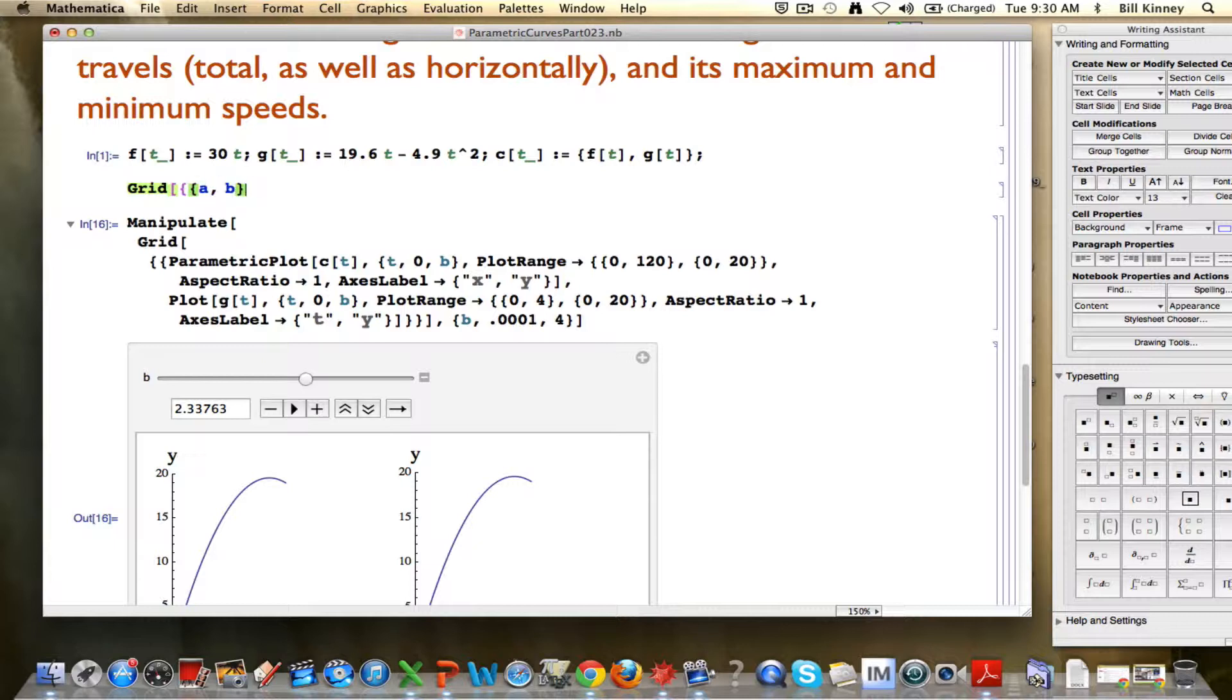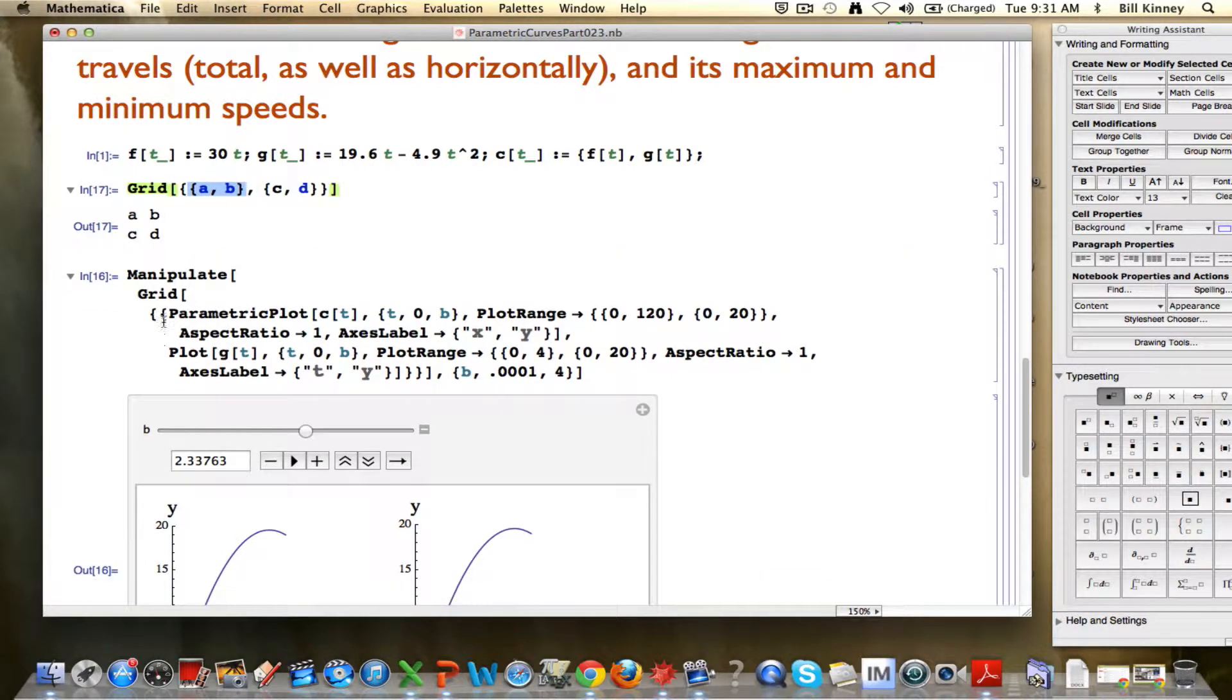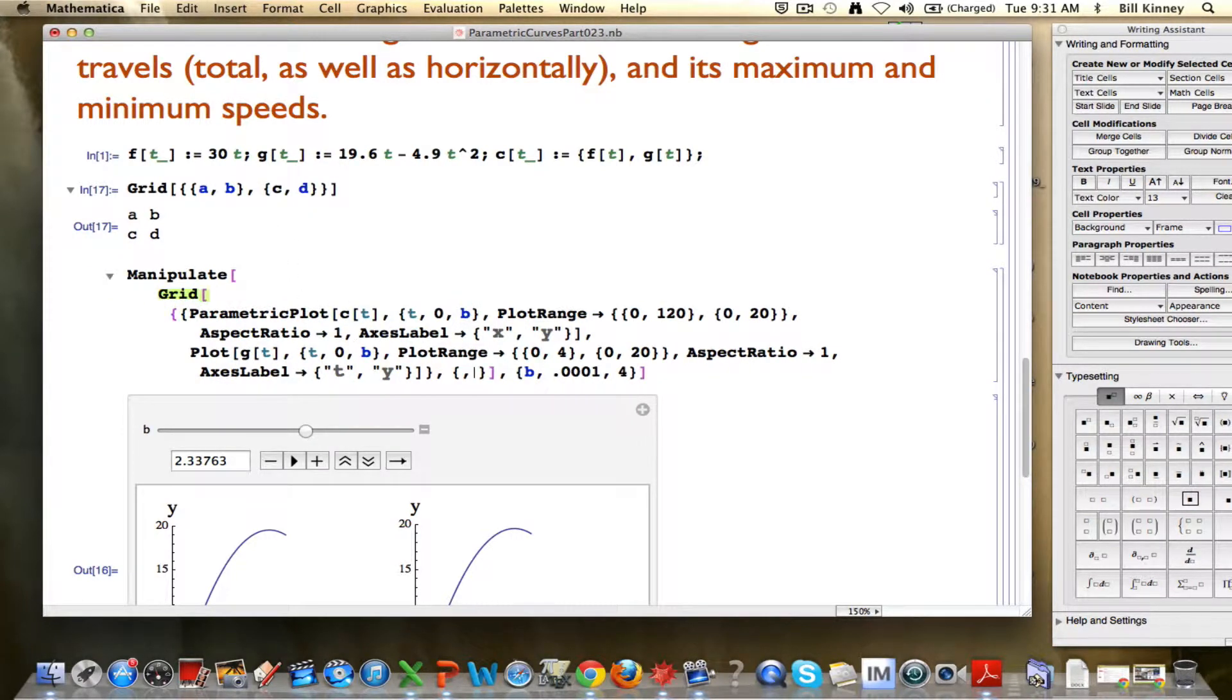Let's do it with a simpler example. If I do something like this, it's going to put these letters in a grid, in a 2x2 grid. That's what I want to do with my graphs. You can notice that I've got the a, b part right here with these parametric plots. Now I want to put a comma there and put a c, d part like this.